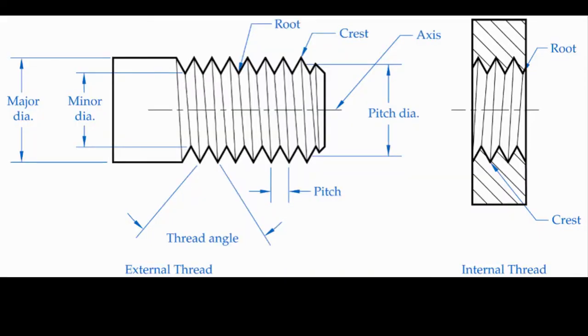Let's look at a thread and get familiar with a few terms. An external thread is a thread on the outside of a shaft — when you think of a screw or a bolt, this has an external thread. An internal thread is the thread on the inside of a hole, found in nuts or machine housings. The crest is the top edge or surface of a ridge. The root is the bottom land between two ridges — the low point on a thread.